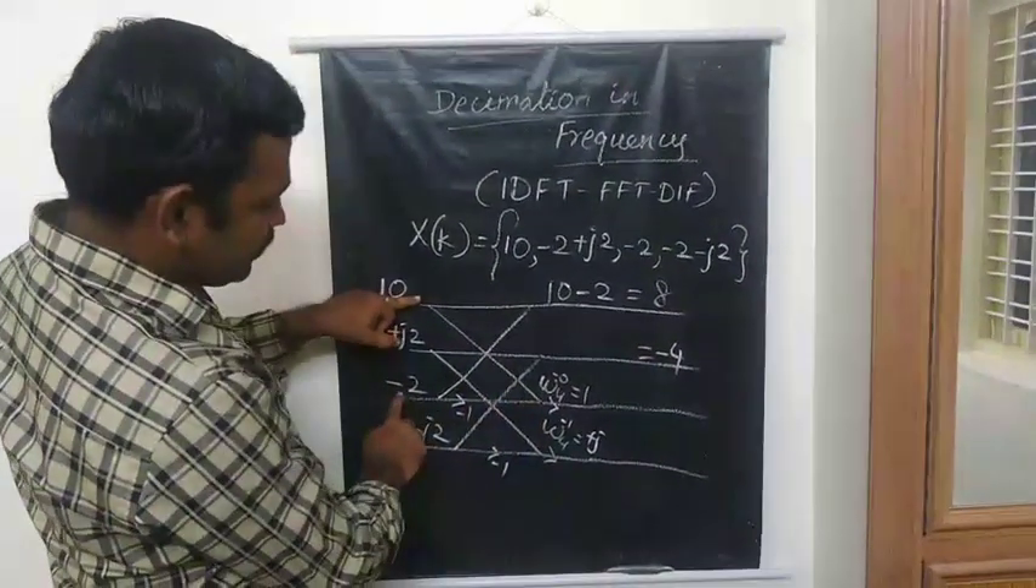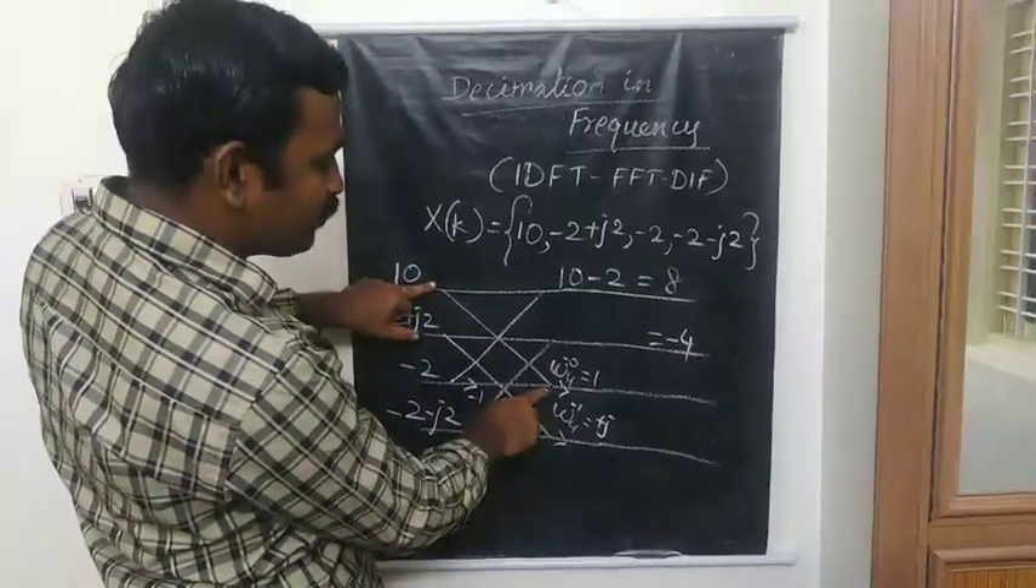Similarly here, -2+j2 and here you are having -2-j2, so the j terms cancel each other, therefore we are getting -4. Here the next one: 10 and this -2 into -1 we are getting +2, so 10+2=12. 12 is multiplied at this point, so you are getting 12. Again, 10 minus 2 into -1 is +2, so 10+2=12, 12 into 1 is 12.